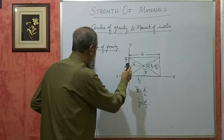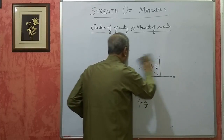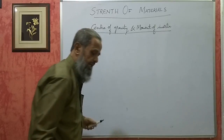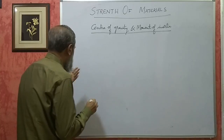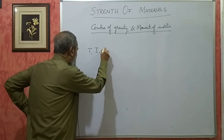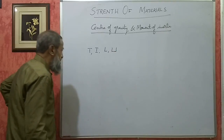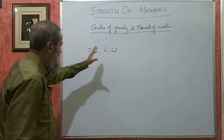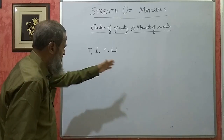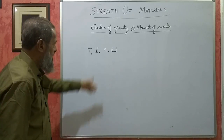We will be given four specific sections: T-section, I-section, angle section or L-section, and channel section. First, we have to find the center of gravity of these sections — that is x-bar and y-bar. If the section is symmetrical, then we have to find either x-bar or y-bar only. We will discuss that later.